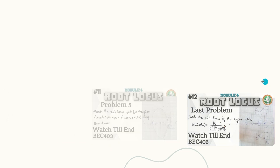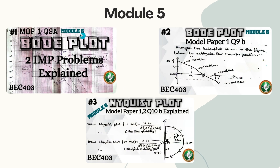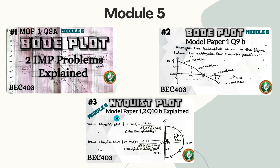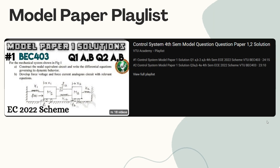Module 5 covers the Bode plot — two important problems discussed from an exam point of view — and one problem related to the Nyquist plot. These topics cover all five modules of the syllabus.